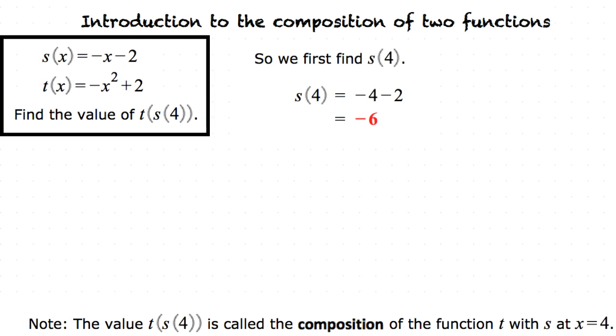First we need to find what s(4) is going to equal. So this means we have the following equation after plugging 4 into the function. Now s(x) is going to equal -x - 2. So plugging 4 into that we have -4 - 2 which gives us -6.